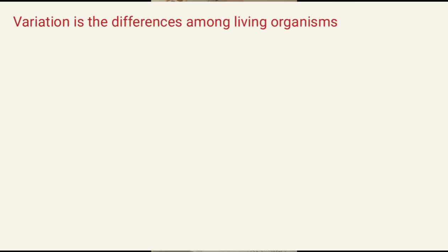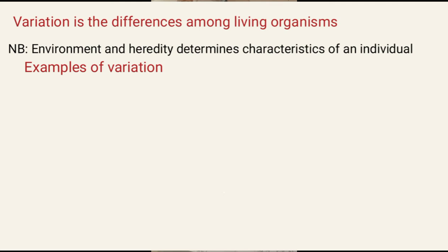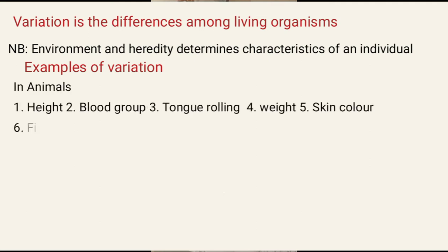Now, mainly there are two factors that determine the characteristics of an individual: Number 1, environment; Number 2, heredity. So environment and heredity determine the characteristics of an individual. Examples of variation in animals include: height, blood group, tongue rolling, weight, skin color, fingerprint, and so on.